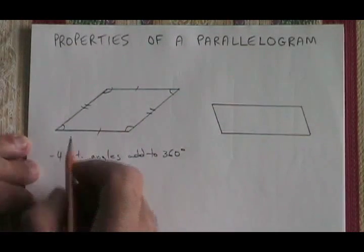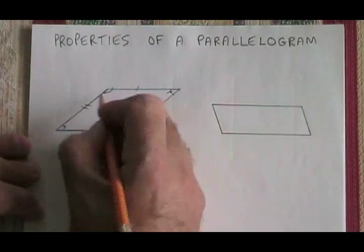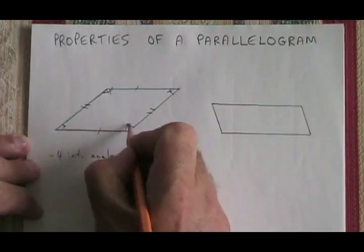The opposite angles are also congruent. This angle is congruent to this one, and this angle is congruent to this one.